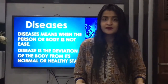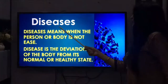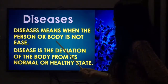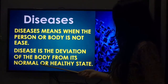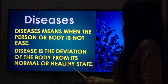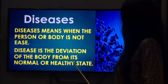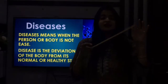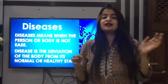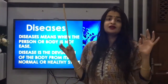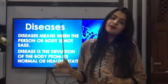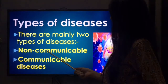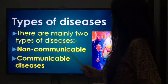We will discuss this chapter thoroughly and understand what are communicable diseases and what are non-communicable diseases. So let's start. Disease means when the person or body is not at ease. Disease is the deviation of the body from its normal or healthy state. There are mainly two types of diseases: non-communicable and communicable.